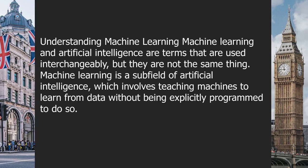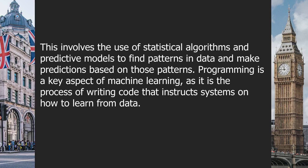Machine learning and artificial intelligence are terms that are used interchangeably, but they are not the same thing. Machine learning is a subfield of artificial intelligence, which involves teaching machines to learn from data without being explicitly programmed to do so. This involves the use of statistical algorithms and predictive models to find patterns in data and make predictions based on those patterns.